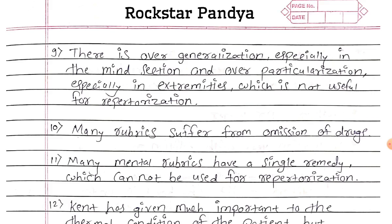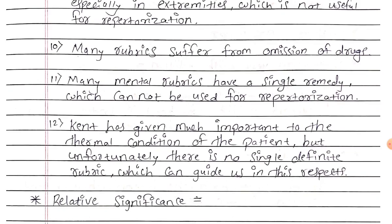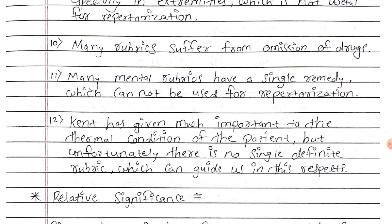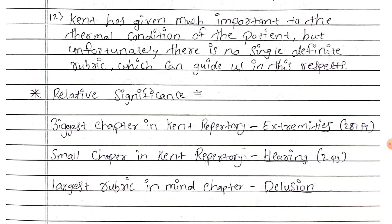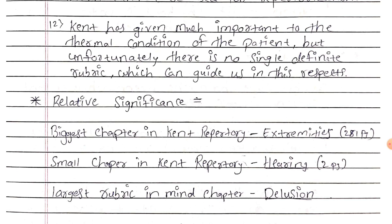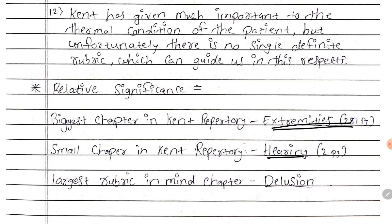Some important MCQ facts about Kent's Repertory: The biggest chapter is Extremities, spanning 281 pages. The smallest chapter is Hearing, which is only two pages. The largest rubric in the main chapter is the rubric of Delusions.